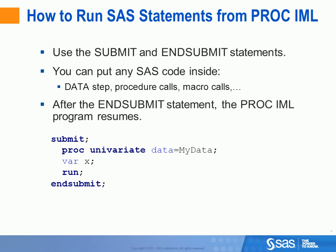Calling SAS from PROC IML is very simple. You use the submit and the end submit statements. Everything that you put between those two statements is sent to SAS for processing. That means you can call data steps, SAS procedures, macros, global statements, anything you like. After the program reaches the end submit statement, you're back in IML. Any variables or matrices that were defined prior to reaching the submit statement are still in scope when you reach the end submit statement. At the bottom of this slide is a very simple example: a submit and an end submit statement with a call to PROC Univariate in between.